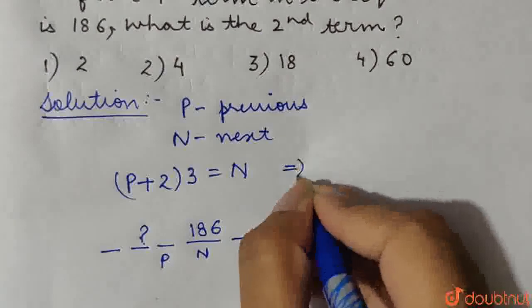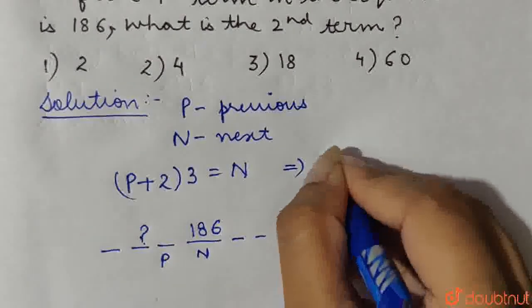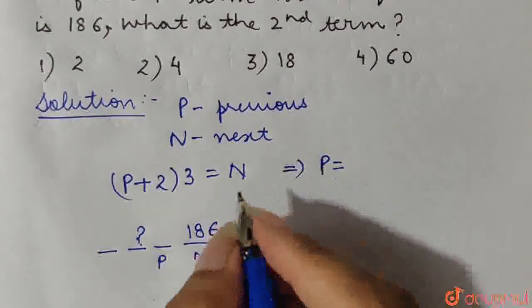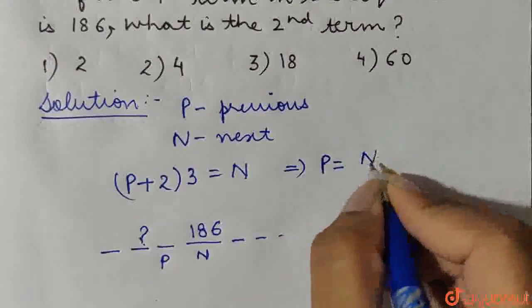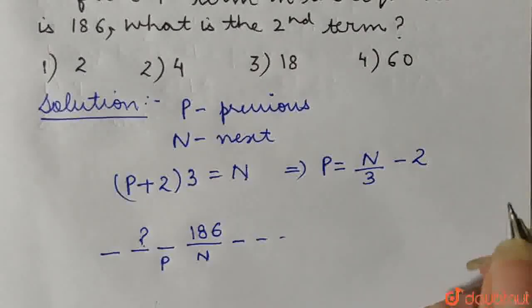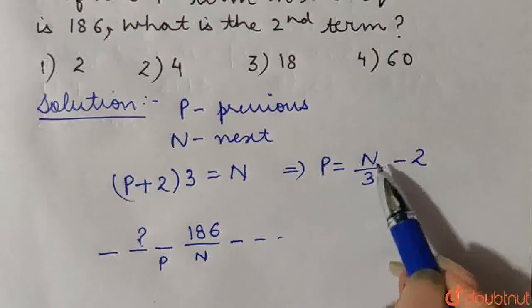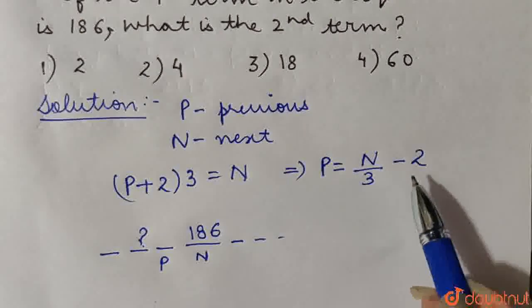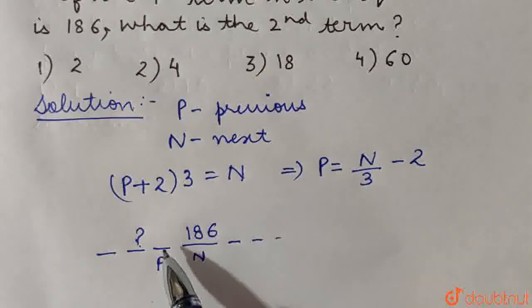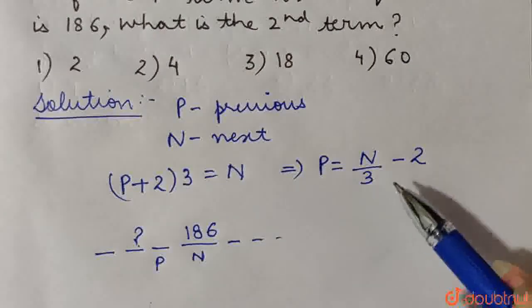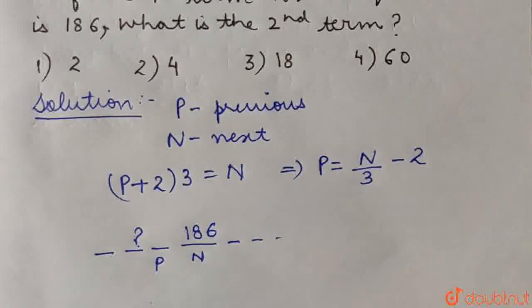So from here we obtain that p, that means the previous value can be obtained by dividing the given value by 3 and subtracting 2 from it. That means the value that has been given to us, we have to divide it by 3 and then subtract 2 in order to obtain the previous value. Then similarly for this number we can apply this same procedure to obtain the 2nd value.